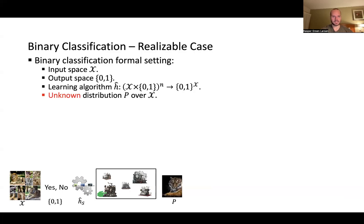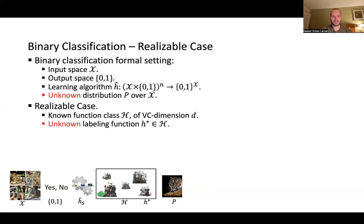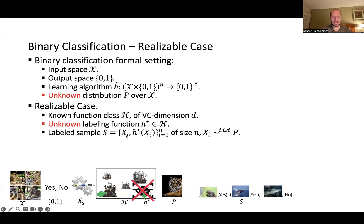There's an unknown distribution p over X, not known to the learning algorithm, and we're in the realizable case. This means our learning algorithm is given access to a hypothesis class H with a fixed VC dimension d. Inside this class is an unknown labeling function h-star — one of the prediction algorithms in H — but we don't know which one. The labeled examples we see are x_i's along with the correct label produced by h-star, and all training samples x_i are drawn independently from distribution p.